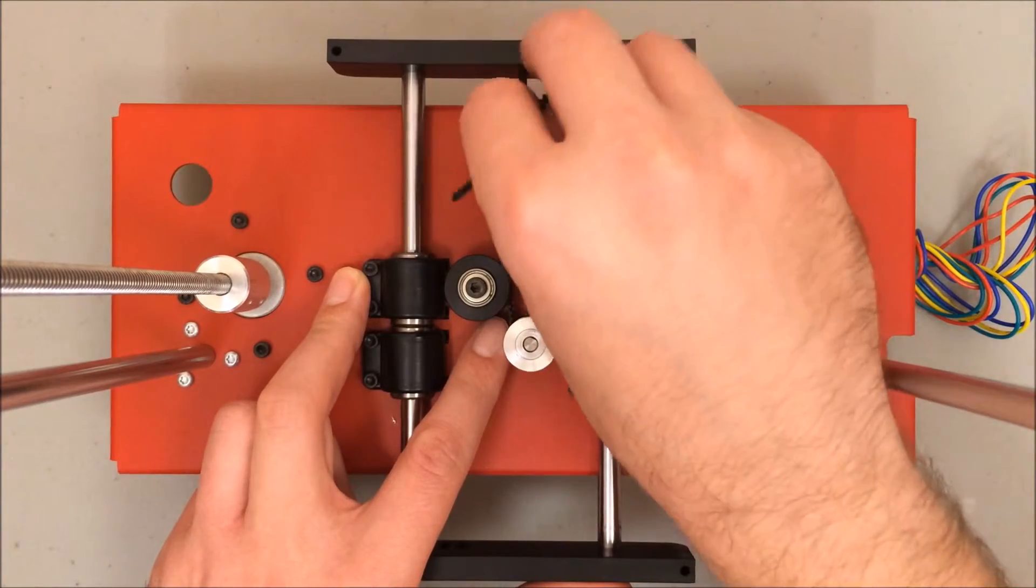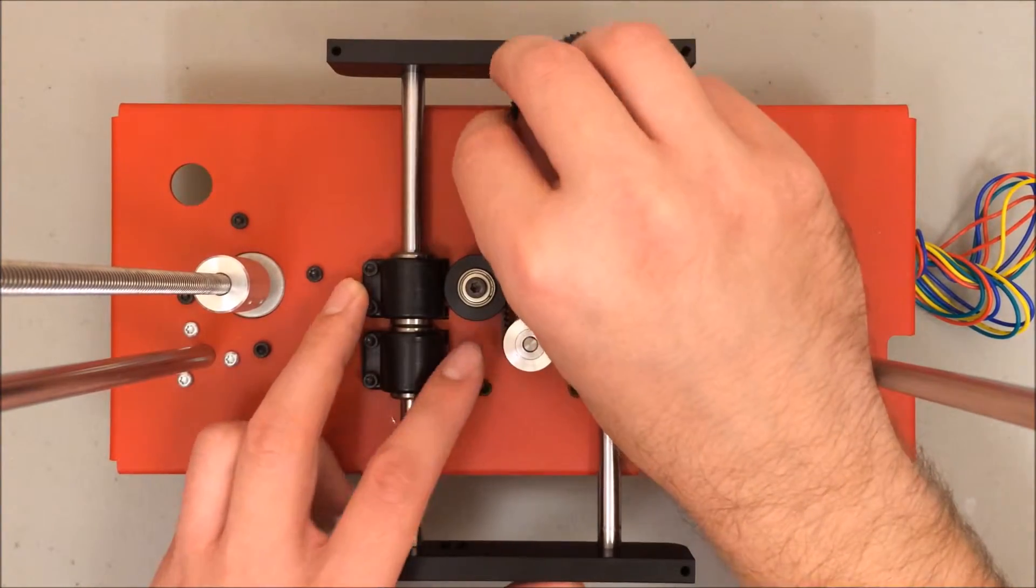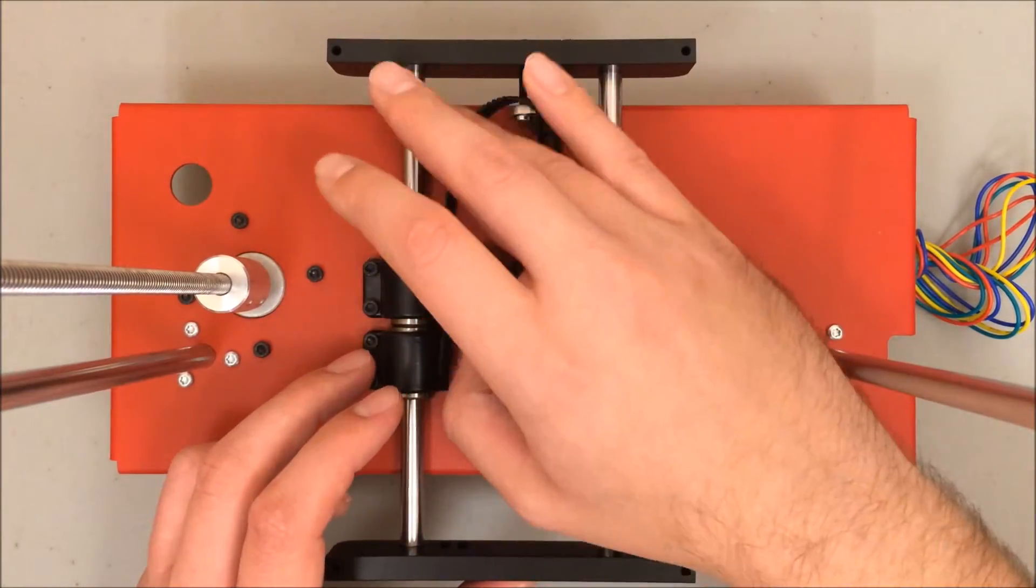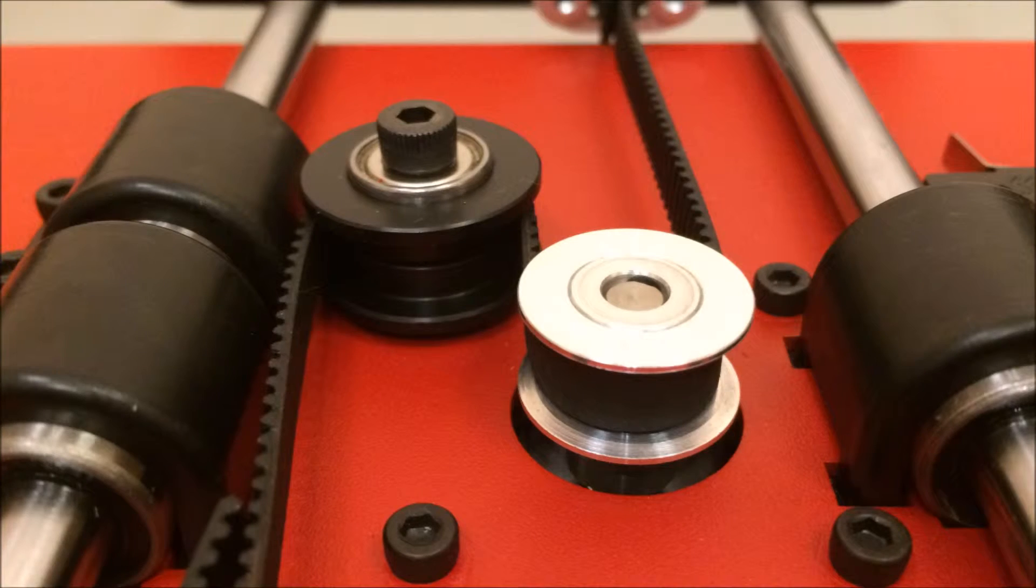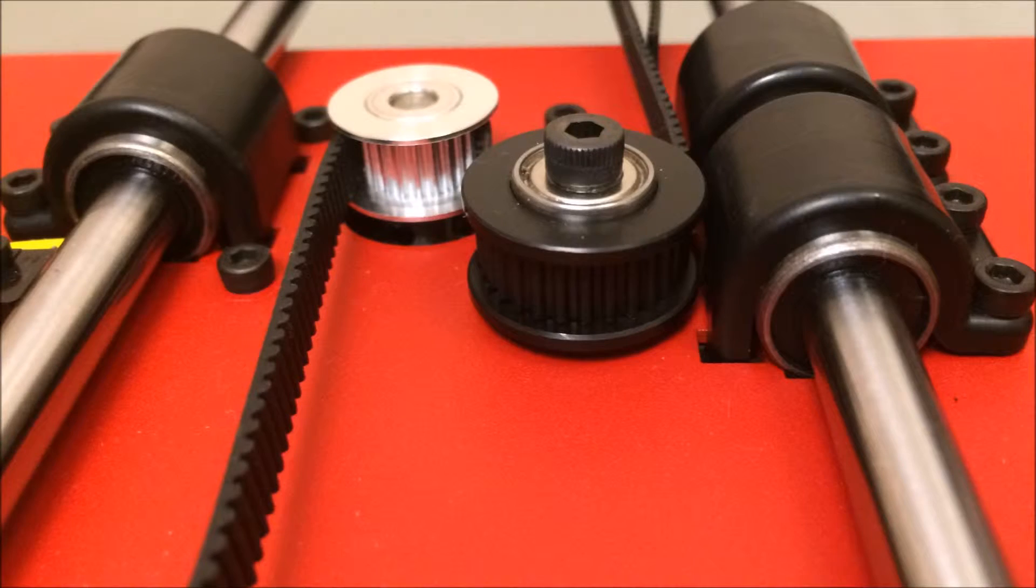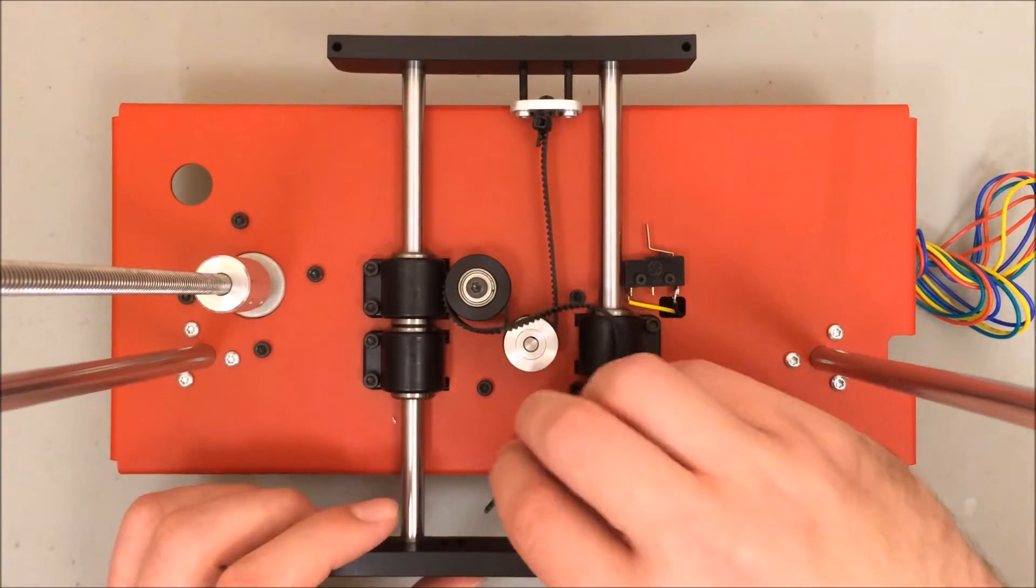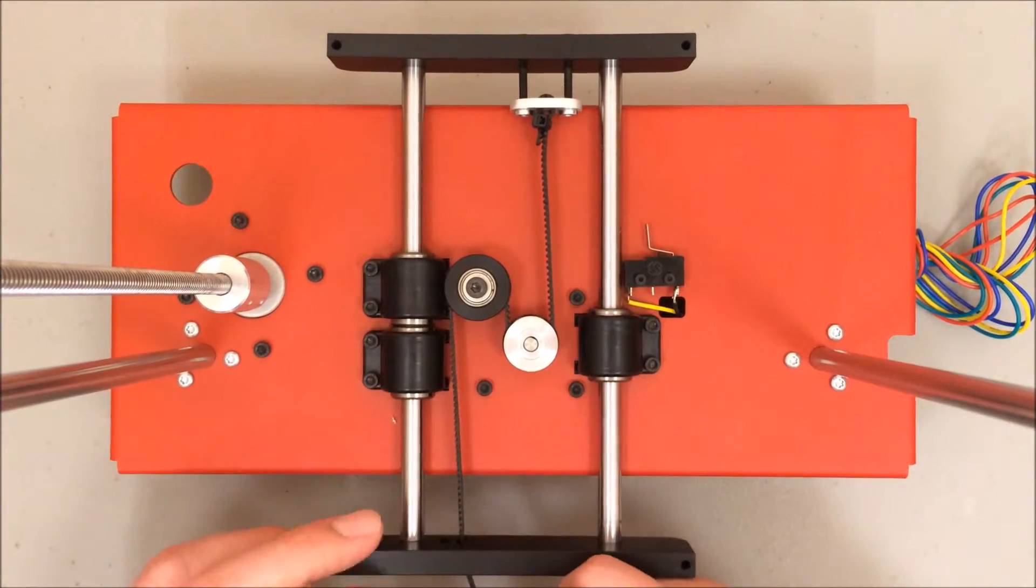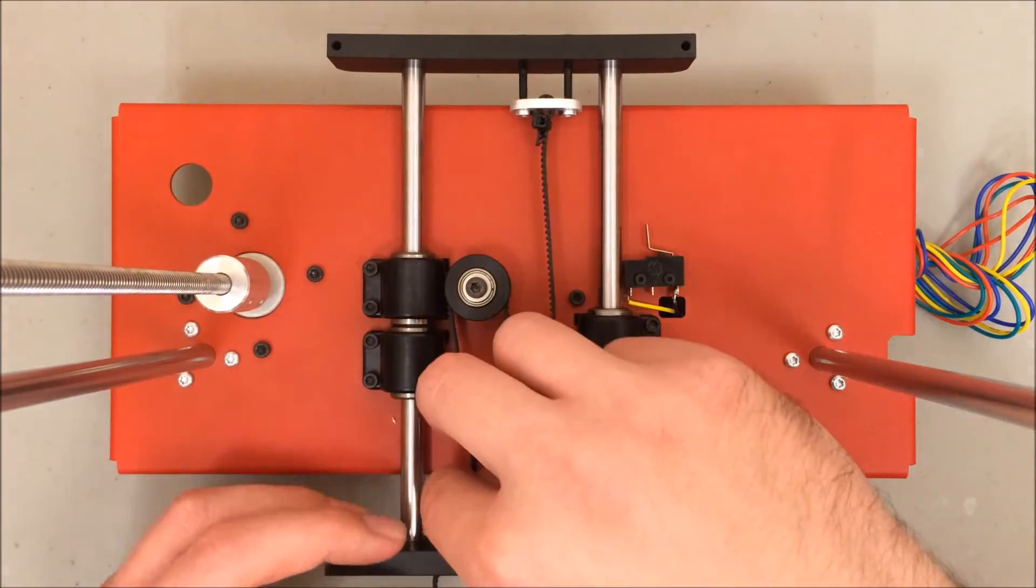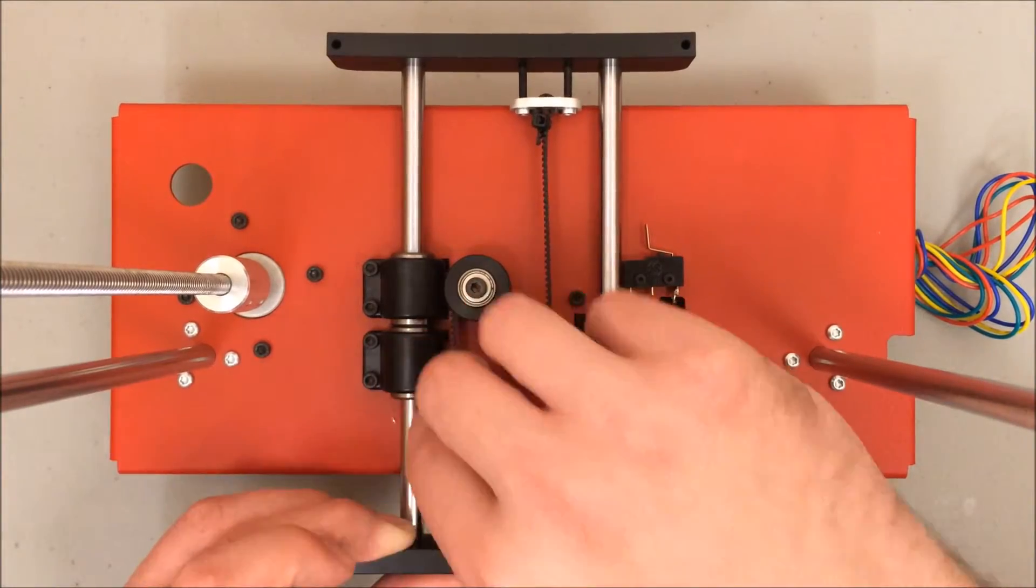Then I go around the idler pulley, and I find it's best to just feed the end of the belt through. Now's a good time to check that the belt is on the inside of those rims of both the pulleys. Feed it out through the right-hand slit, and then back through the left-hand slit. Pull away all the slack that you can.